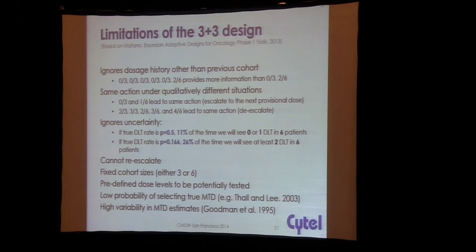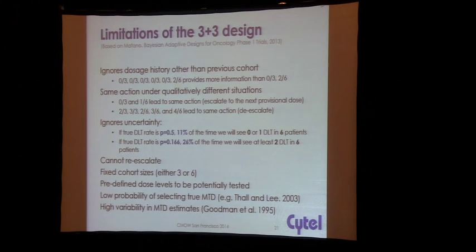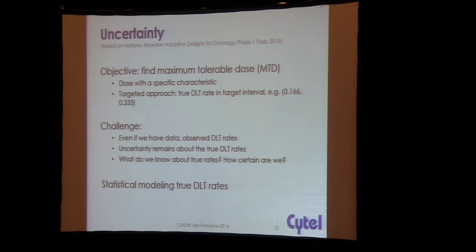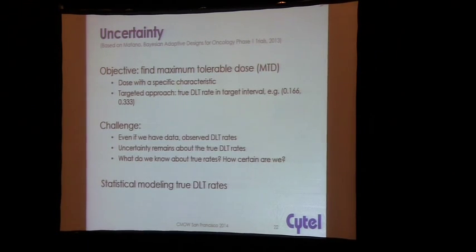The major point is that we're basically not taking into account uncertainty. We're assuming that what we observe is true instead of assuming that what we observe reflects some true underlying DLT rate. This is where statistical modeling can come in and help you try to infer what is actually going on behind the scenes and what it means in terms of your likelihood of toxicity in the next cohort. A lot of the modeling can help you do prediction and guide your decisions.